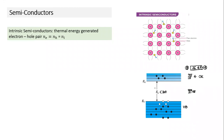As each electron moves from the valence band to the conduction band, it leaves behind a hole — a vacancy treated as a positive charge. Electrons in the valence band can also move and occupy a hole, creating motion of holes. Electrons move in the conduction band, holes move in the valence band, and each of these motions contributes to current.